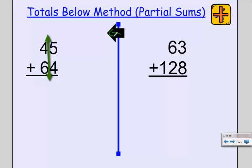I'm going to do this with two different totals below. My first total is going to be my ones column. Five plus four is nine. My next total is going to be my tens column, and I've got to look inside these numbers. I've got to know that 45 is made up of 40 plus 5.